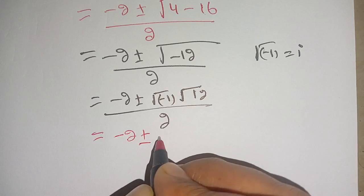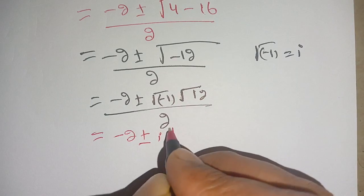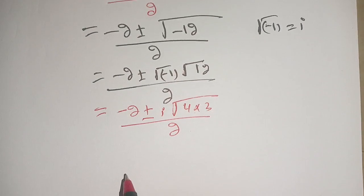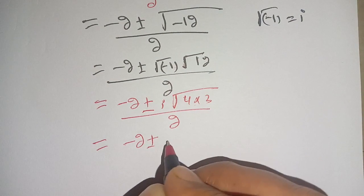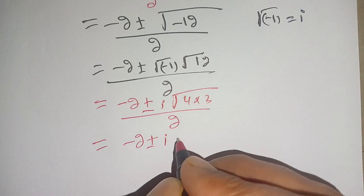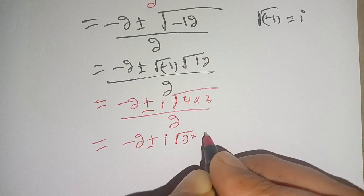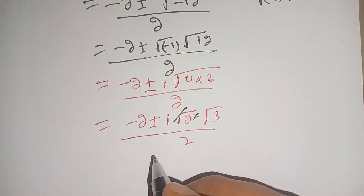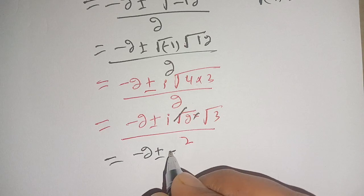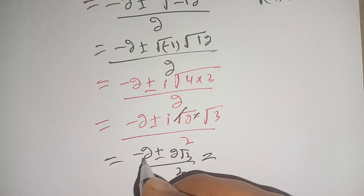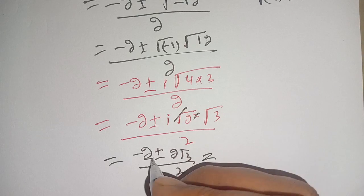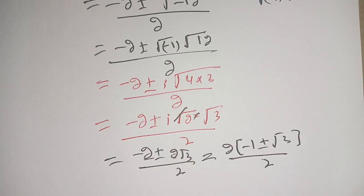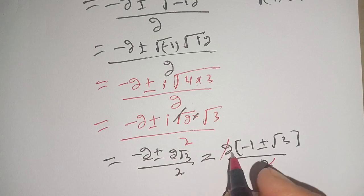In place of square root of minus 1 we put iota. We get minus 2 plus or minus iota times square root of 12. Now 12 can be written as 4 times 3, so square root of 12 becomes square root of (2 squared times 3), which gives 2 root 3. So we get (minus 2 plus or minus 2i√3) divided by 2. Taking out the factor of 2, we get 2 times (minus 1 plus or minus i√3) divided by 2.